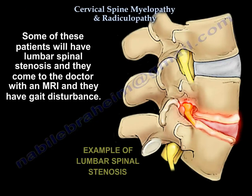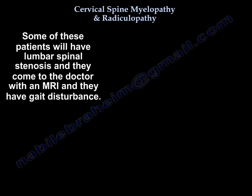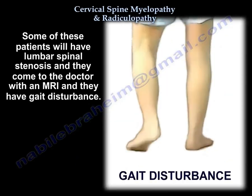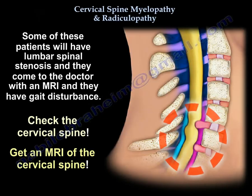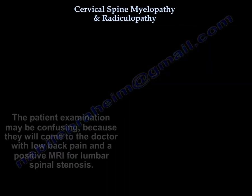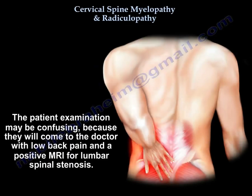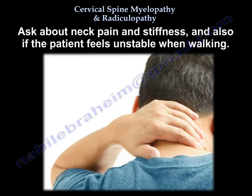Some of these patients will have lumbar spinal stenosis and they come to you with an MRI, but they have gait disturbance — check the C-spine and get an MRI of the C-spine. The exam may be confusing because they will present with low back pain and a positive MRI for lumbar stenosis. Ask them about neck pain, stiffness, and if they feel unstable when they walk.